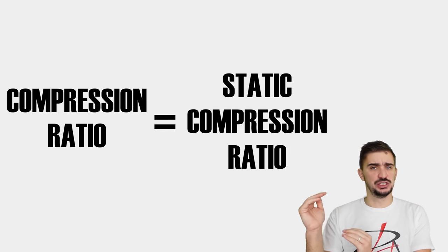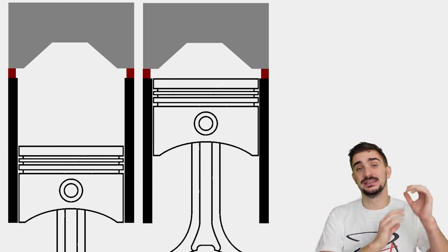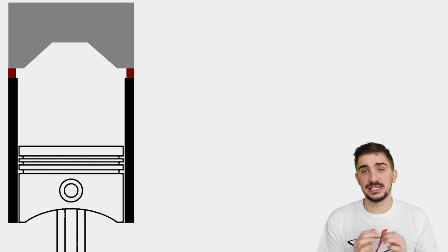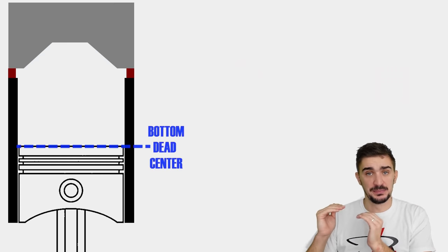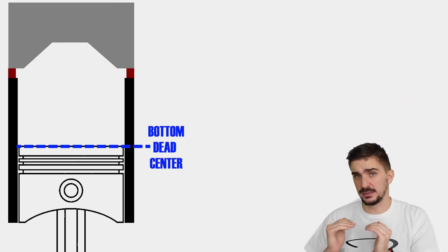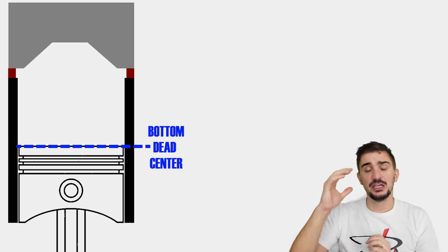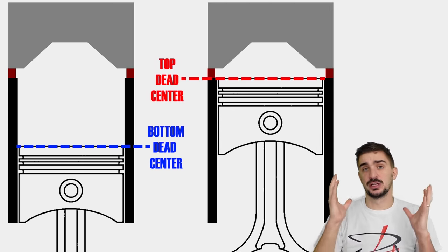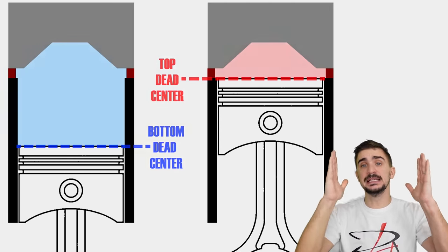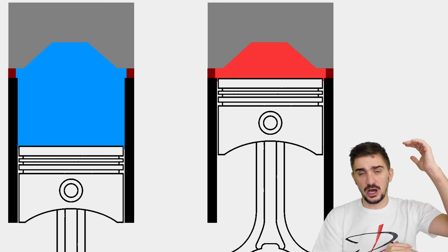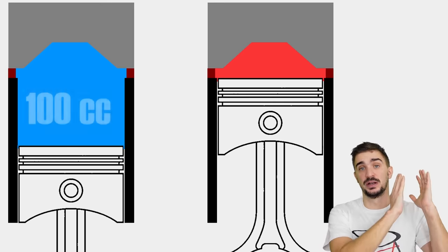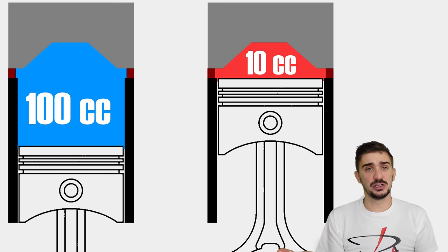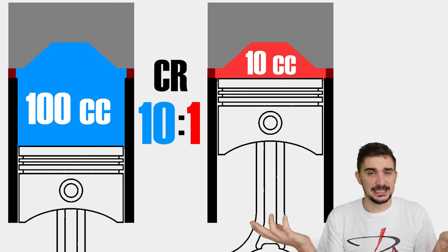When we say compression ratio, we're talking about the static compression ratio of your engine — the ratio between the largest and the smallest volume of your cylinder. The largest volume is determined by the position of the piston at bottom dead center, and the smallest occurs when your piston is at top dead center. So if our largest volume is 100cc and our smallest is 10cc, then our compression ratio is 10 to 1. It's that simple.